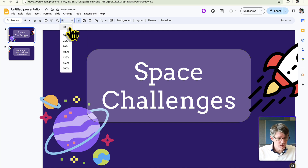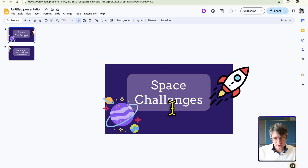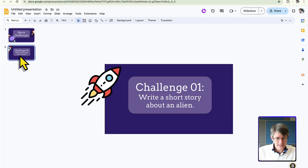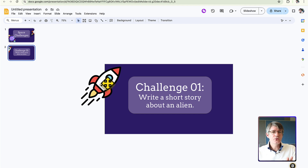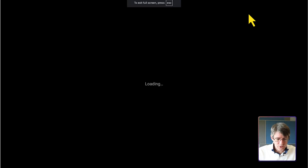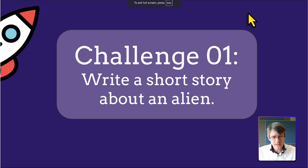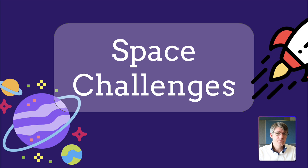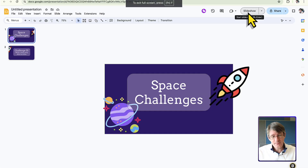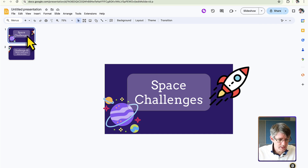Zooming out, you can see slide one has the rocket hanging off the right, and slide two has the rocket coming in from the left — creating the impression of continuous movement. When you press slideshow, the slides jump from one to the other. That's step one. Step two is selecting the correct transition.